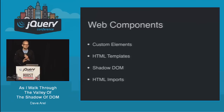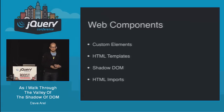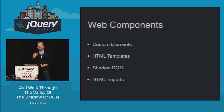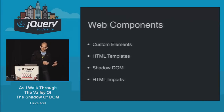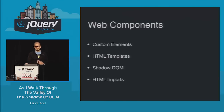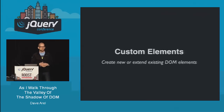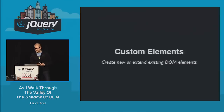So the web component spec is made up of four specs, and along the same lines of the decoupling paradigm, they're all fairly decoupled — they don't require each other. Custom elements don't need HTML templates. Shadow DOM doesn't need HTML templates. They can all be used by themselves. Custom elements is a way to create new or extend existing DOM elements.